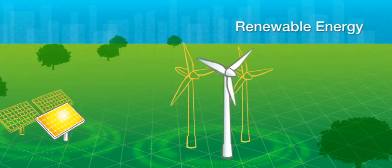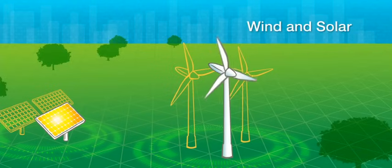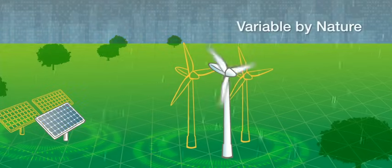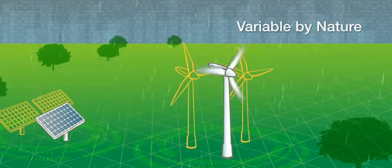Renewable resources such as wind and solar are a sustainable and growing source for electric power. However, renewable power sources are variable by nature and add complexity to normal grid operations.